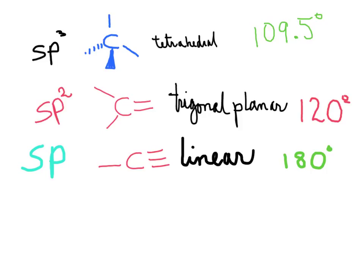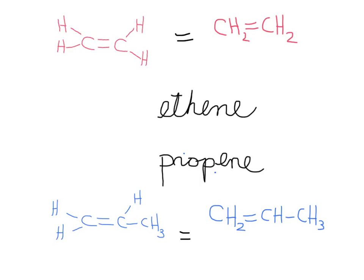Before we explore the details about unsaturated compounds, it is important to recall the shapes of these molecules. The family of alkanes contains carbons with only single bonds; the hybridization is sp3, the shape is tetrahedral, and the bond angle is 109.5°. For alkenes with double bonds, the shape around the central atom is trigonal planar, the hybridization is sp2, and the angle is 120°. For alkynes with a triple bond, the shape is linear, hybridization is sp, and the angle is 180°.